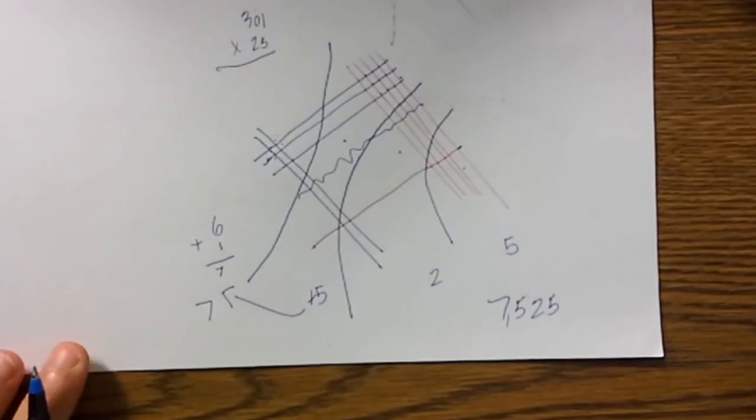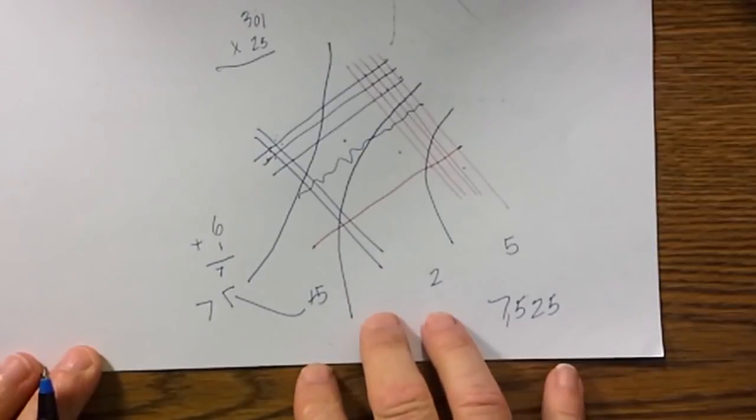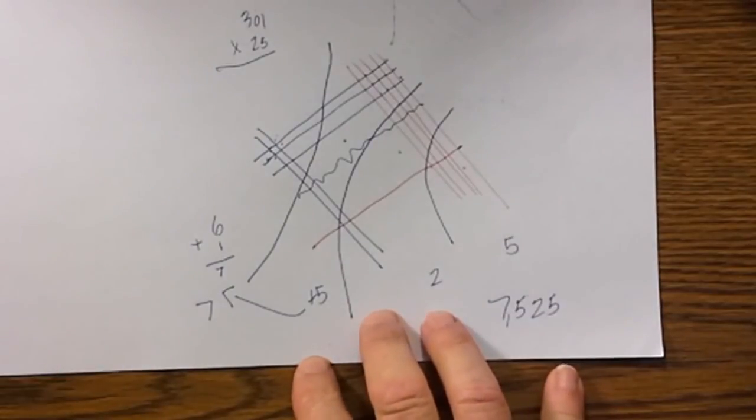If you look below I have a link with a little bit more information. Hopefully that was helpful on how to multiply using lines.